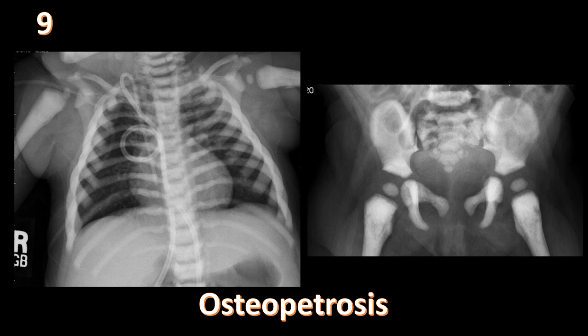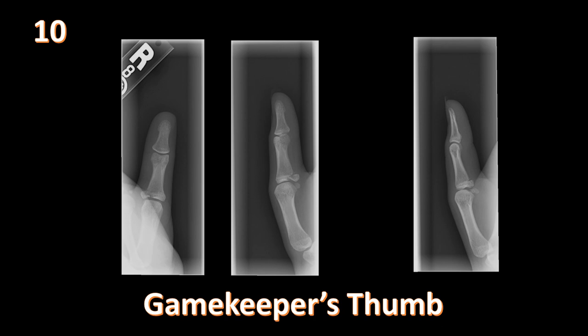Three views of the thumb show an osseous gamekeeper's thumb: there is an avulsion fracture at the base of the proximal phalanx on the ulnar side, representing avulsion of the ulnar collateral ligament. If the radiograph is negative with suspected UCL injury, MRI is performed. On MRI, confirm UCL integrity and check whether the aponeurosis of the adductor pollicis is interposed between the ligament and bone — this is a Stener lesion, which requires surgical intervention. The MRI sign is called the yo-yo on a string.